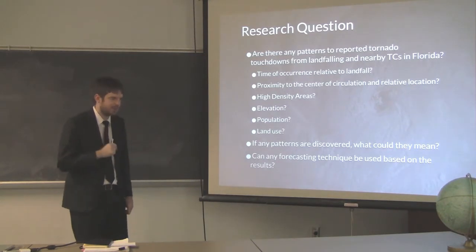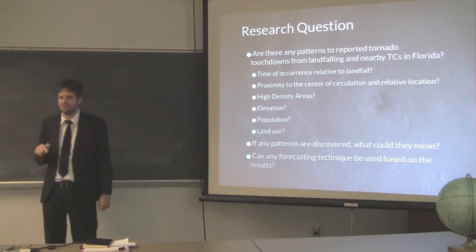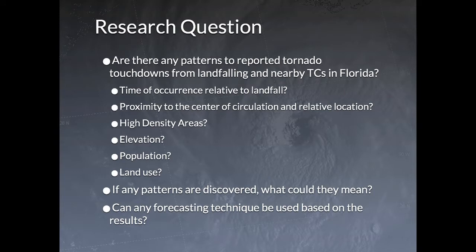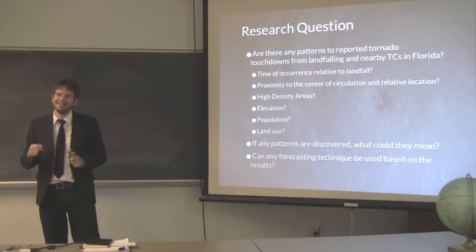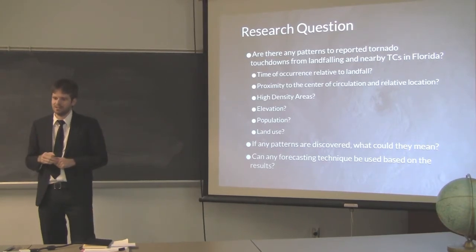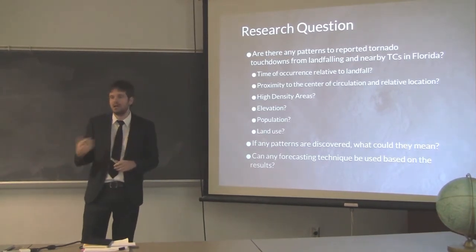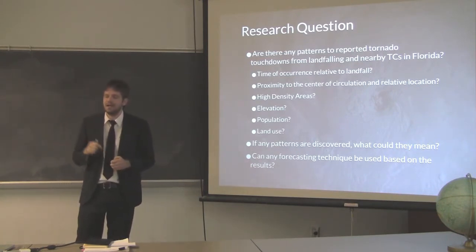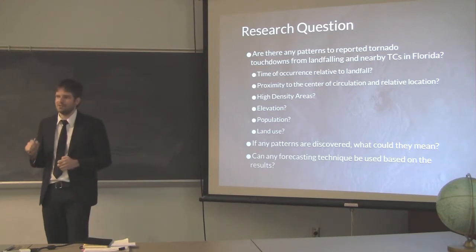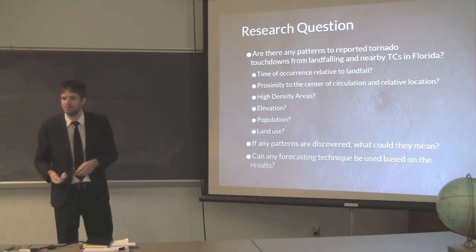We want to know: are there any patterns with tornado touchdowns from landfalling or nearby tropical cyclones in Florida? Are there patterns with time of occurrence relative to landfall? Any patterns of proximity to the center of circulation, or relative direction by bearing and distance? Are there high-density areas in the state? Are there patterns of elevation, population, or land use? And can a forecasting technique be determined based on these results?